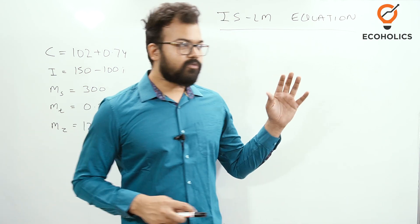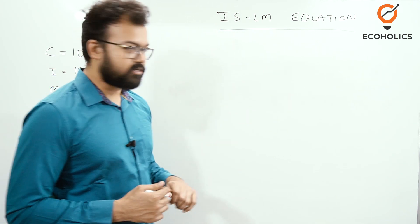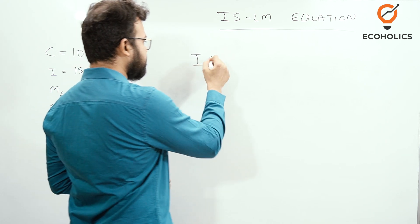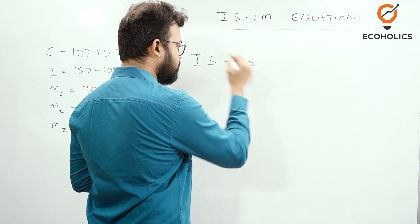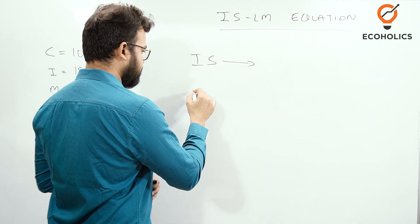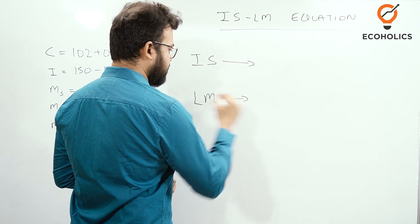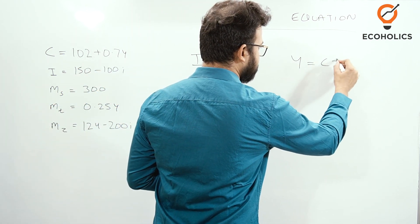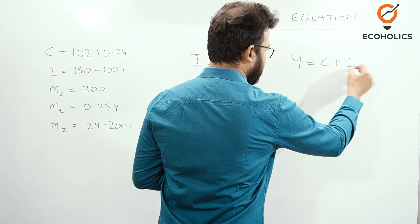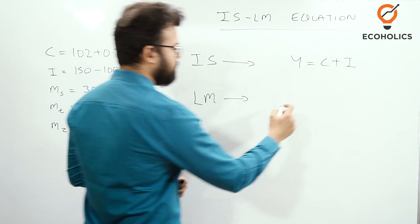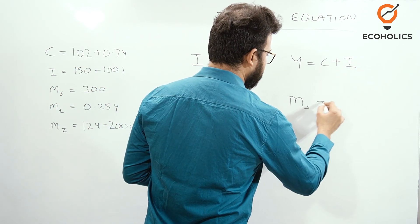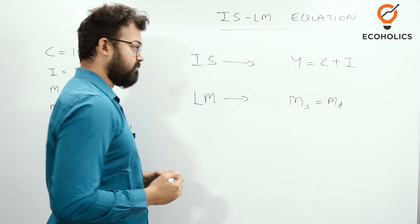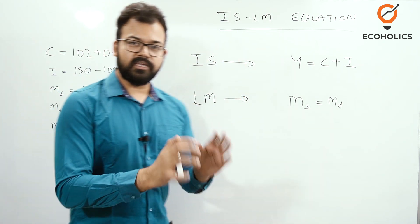First of all, what is IS and what is LM? IS represents Investment-Saving, which is what we call the commodity market or the goods market. LM is the money market — Liquidity and Money. The equilibrium position for IS is Y = C + I, and for LM it is Money Supply = Money Demand.